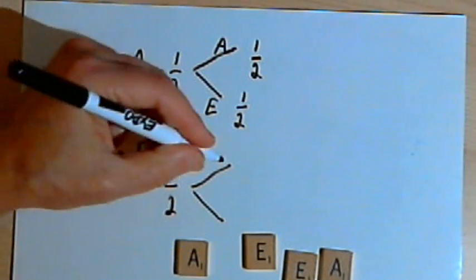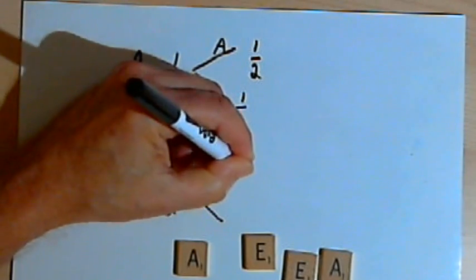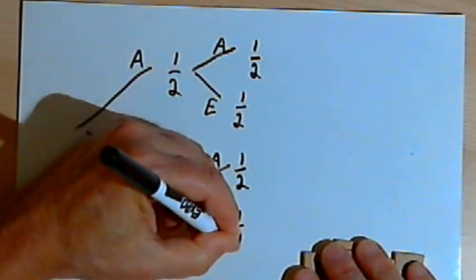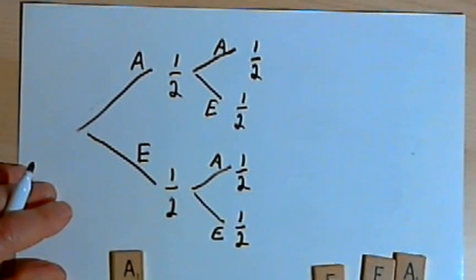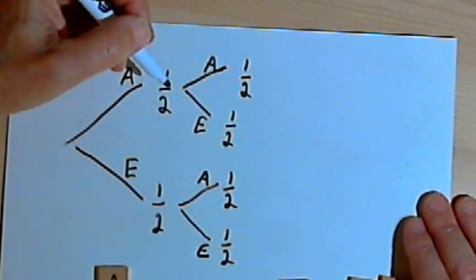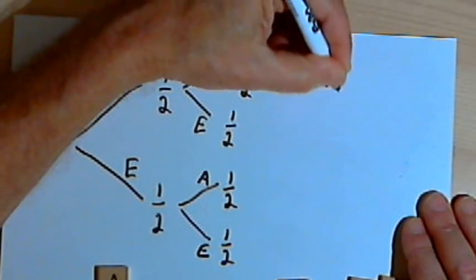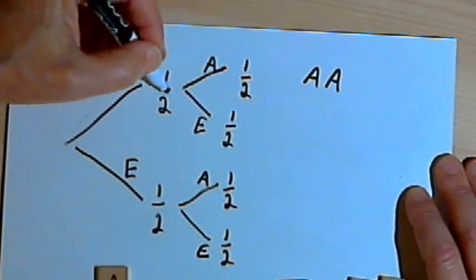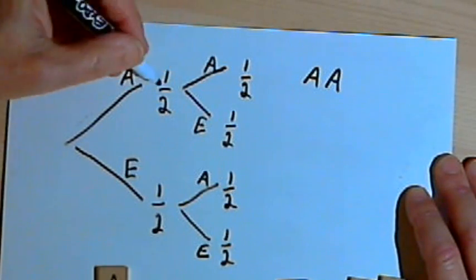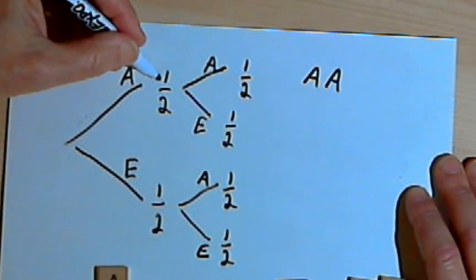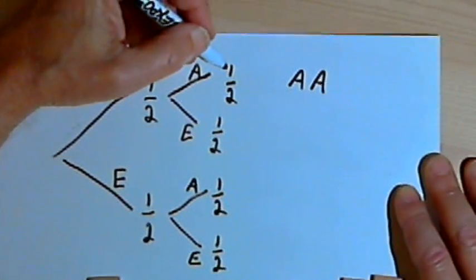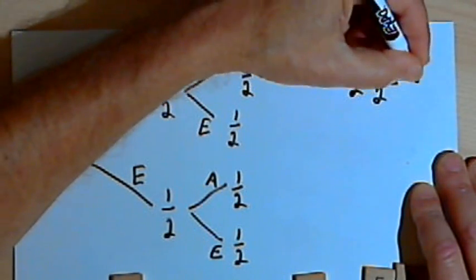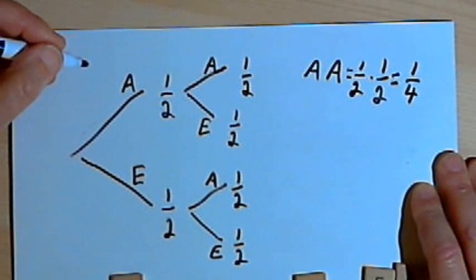If I put it back in the bag — if I replaced it — then my probability for getting an A on the second turn would be one-half, and my probability for getting an E on the second turn would be one-half. We can take this tree and figure out the probability of getting two A's in a row. All we have to do is follow the branch of the tree that gives two A's in a row and multiply the probabilities each time. So I've got a probability of one-half from the first time and one-half from the second time — one-half times one-half equals one over four, or one-quarter.